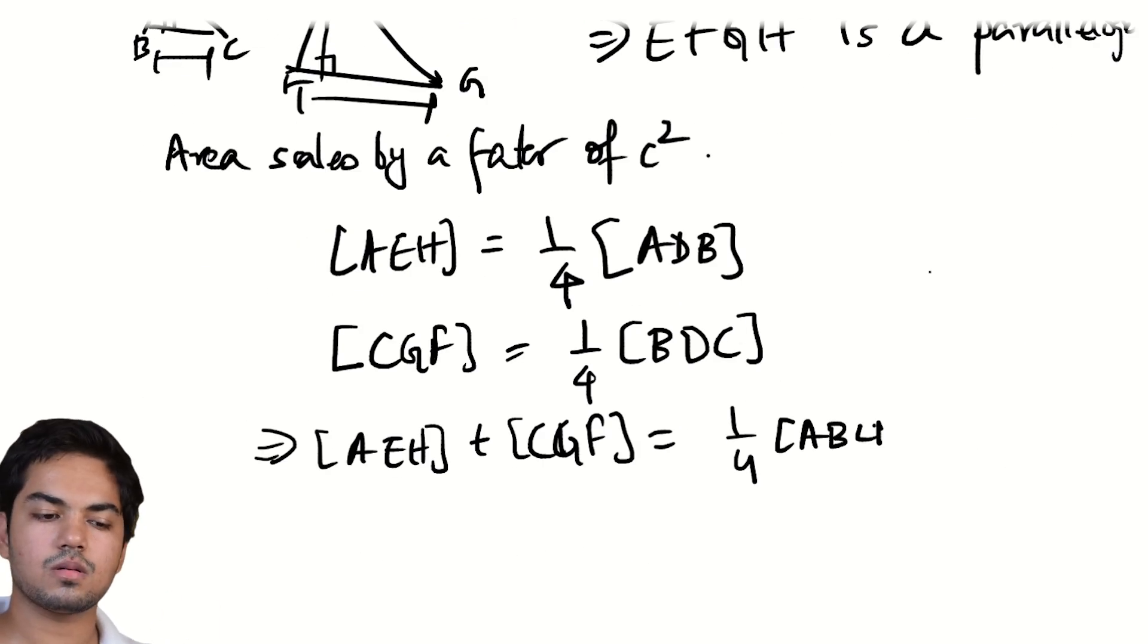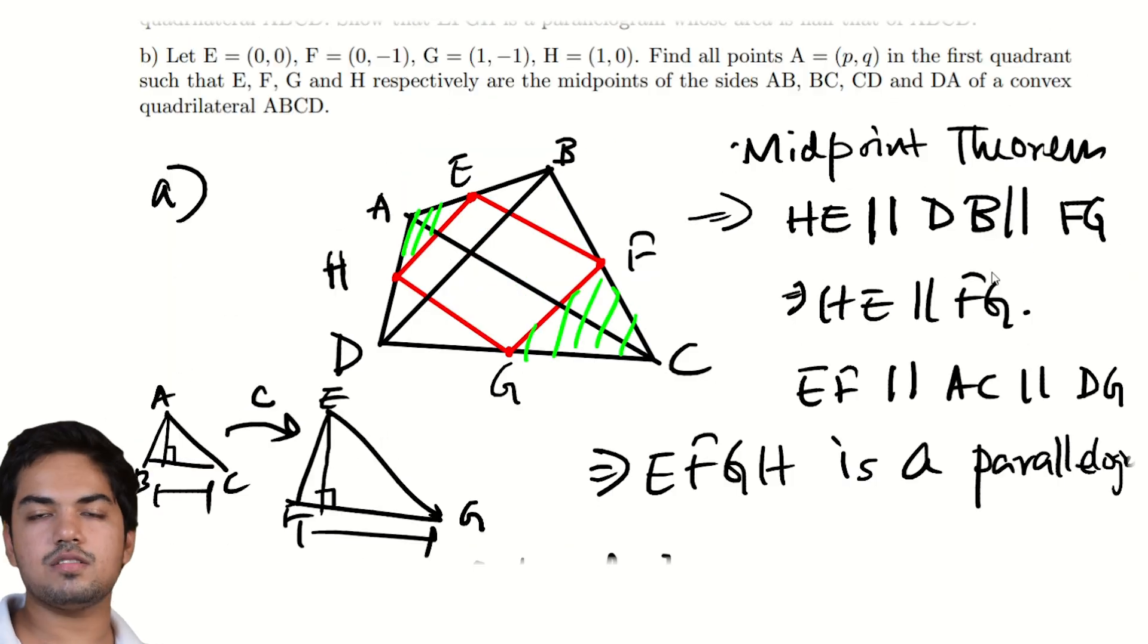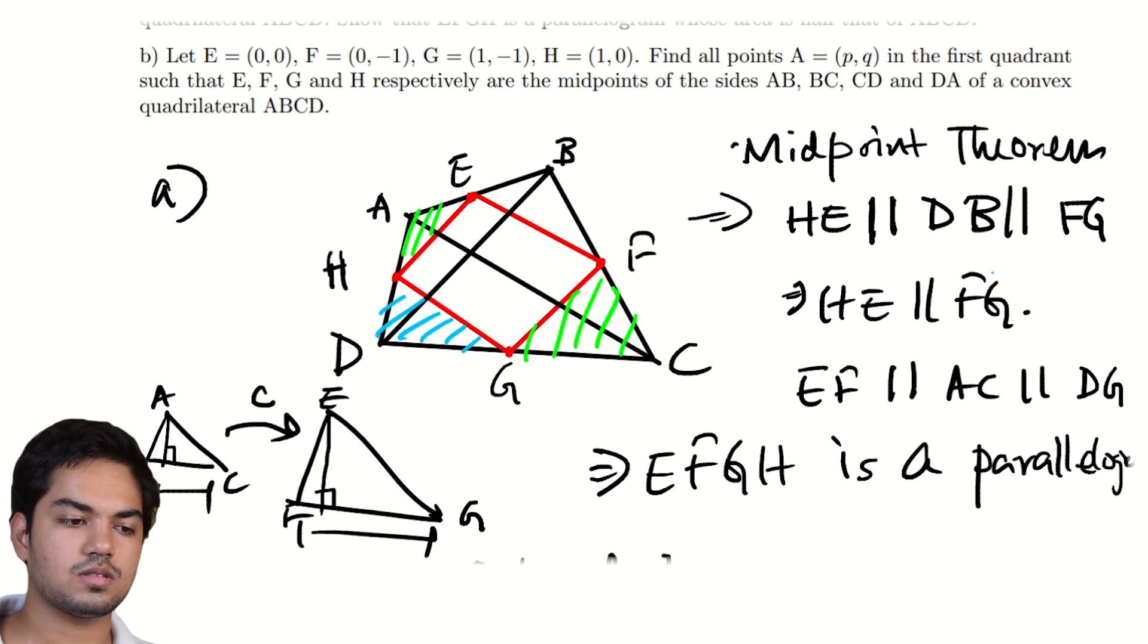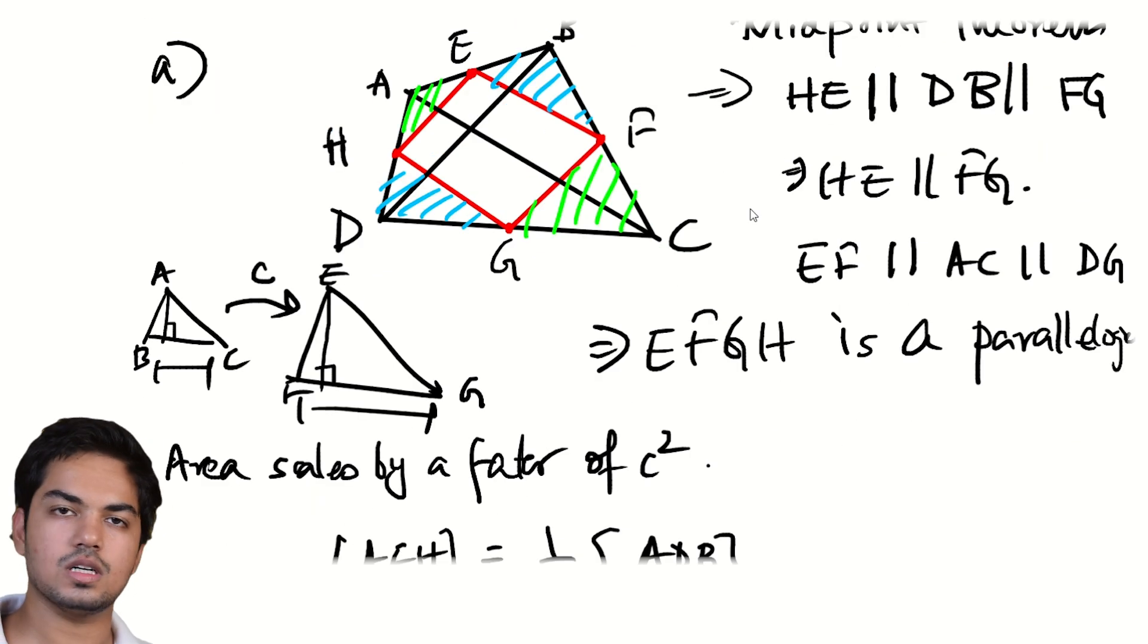Why did we do this? The point is that the area of EFGH directly is hard to get at. So instead, we find the area of the region except EFGH of the green and blue parts. Right? And so if we can show that that part is half of the area of ABCD, EFGH is also going to be half the area of ABCD, right? So maybe take a moment to internalize that.